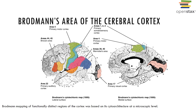The left brain possesses the general interpretive and speech centers and is important in language-based skills such as reading, writing, speaking, math, and logic. The cerebral cortex contains three functional areas: a motor area which controls voluntary motor functions, a sensory area which provides conscious awareness of sensations, and an association area which integrates all sensory and motor information. No functional area of the brain acts alone, and conscious behavior involves the entire cerebral cortex.